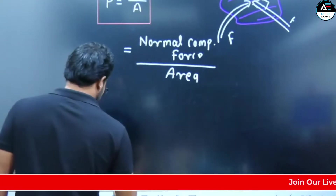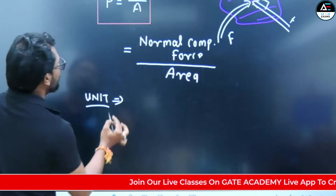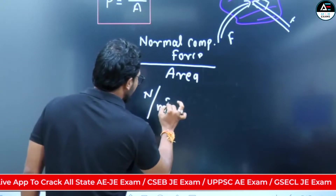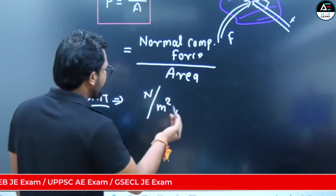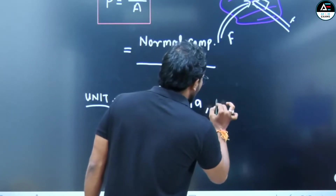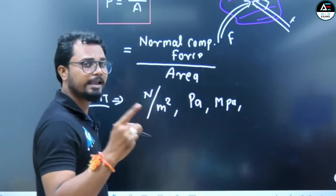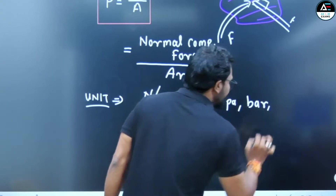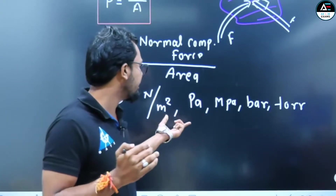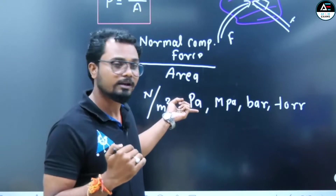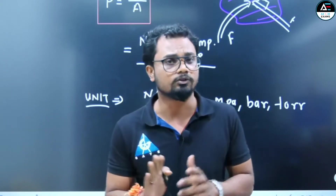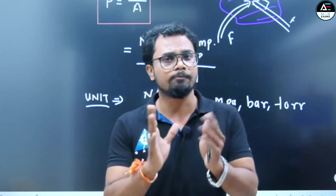Now talking about units — the unit of force is Newton and the unit of area is meter square, so the unit of pressure is Newton per meter square, which is called Pascal. Other units you will see are bar and torr — these are different types of units for pressure. Pascal is the SI unit.